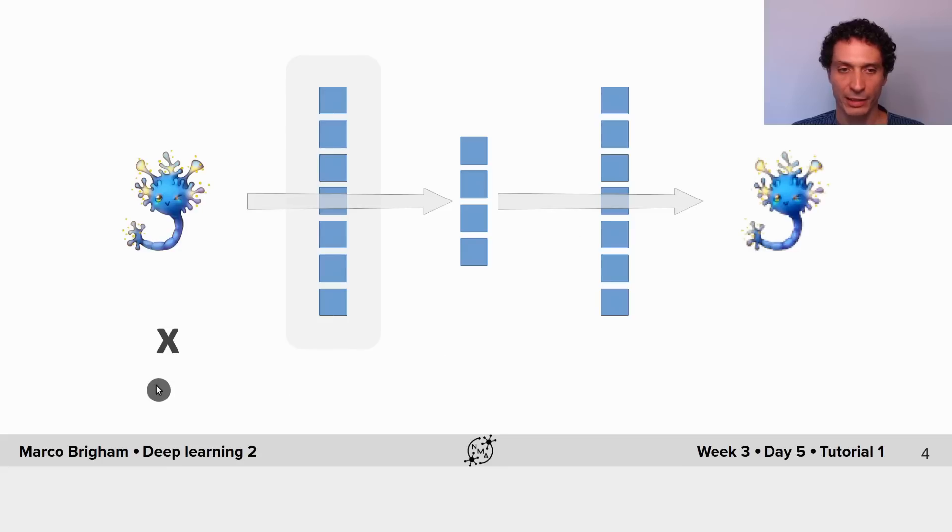So let's call x our input and let's say x is an image, in this case this cute cartoon on the left. Let's call z the representation of the input in the bottleneck layer which we also call latent space, and let's call x tilde the reconstructed output, and we want that the output resembles as closely as possible the input.